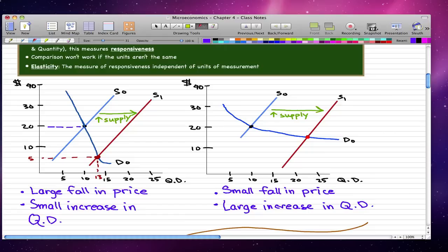Let's just jot that down. This is a big fall in price, and this here is a small change in quantity demanded.